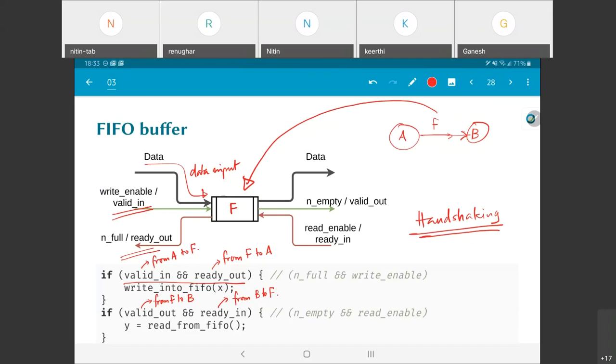On the other hand, by having that signal over there, what we have allowed is that very easily by having one extra piece of logic, we are able to say that look, if this is a finite FIFO, it will still be able to tell A to stop pushing more data.